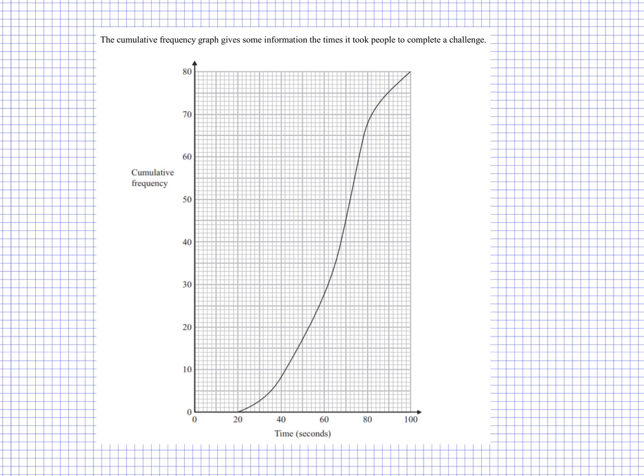So we can look at finding, for example, the 10th percentile. The 10th percentile would be 80, and then I find the 10th, 10% of that. So 10% of 80 is 8. It would be where the 8th person is, which is about here. So I go across and I make a reading here, and that would be our 10th percentile.